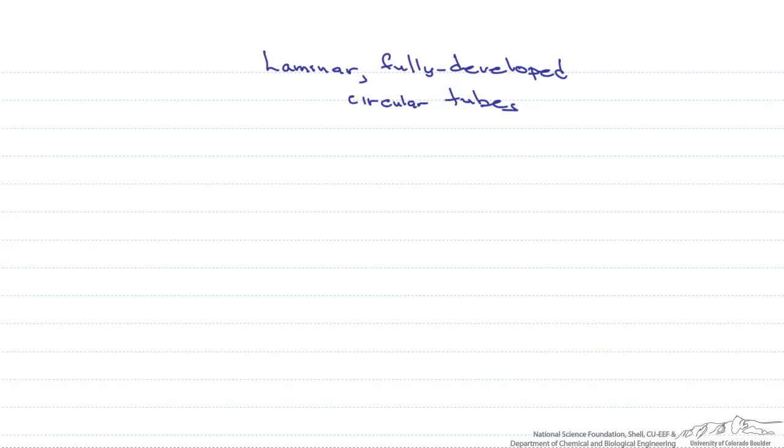First, what do we mean by laminar? Well, laminar refers to the type of flow and in this case it's a very orderly, highly organized flow.